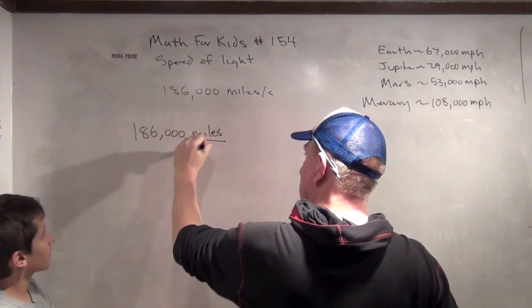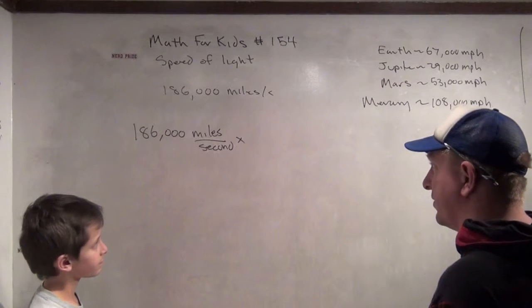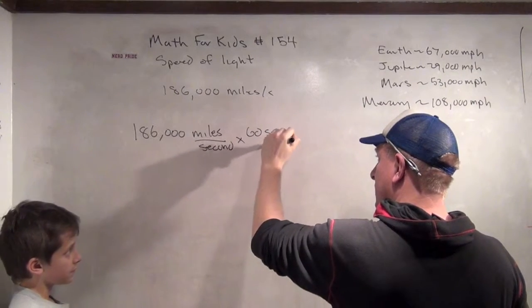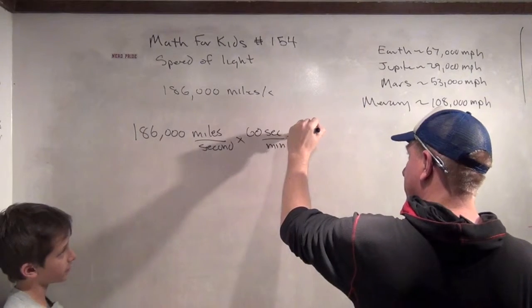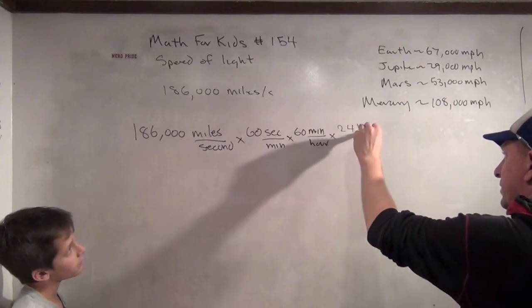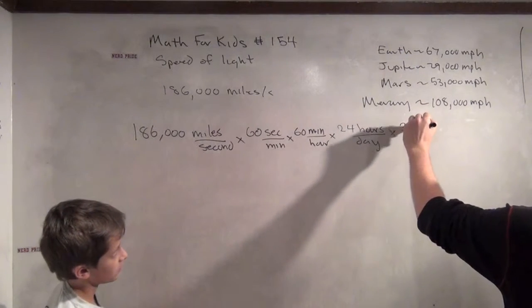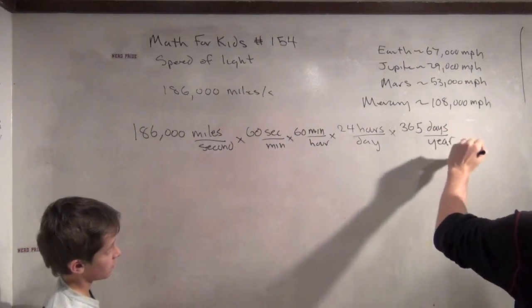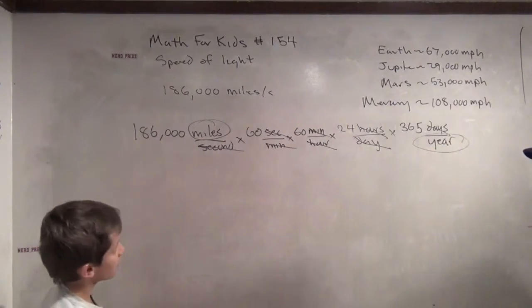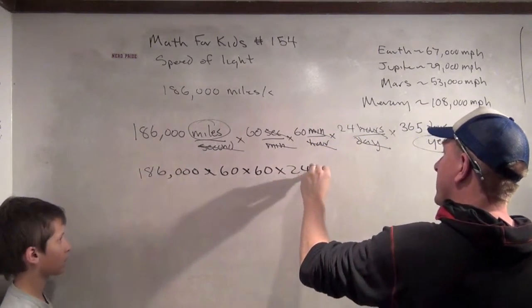Well, what we have to do is we got to get how far it can travel in a day. Okay. Great. So, how do we get from seconds to days? You have to multiply by 60. You have to multiply by... Okay. 60 seconds per minute times what? 60 minutes per hour. 60 minutes per hour times... Times 24 hours per day. 24 hours per day. And then how do we get to a year? Times 365 days. 365 days per year. Okay. Notice the days cancel, the minutes cancel, the hours cancel, the seconds cancel. And we're left with miles per year. And we have to compute 186,000 times 60 times 60 times 24 times 365.